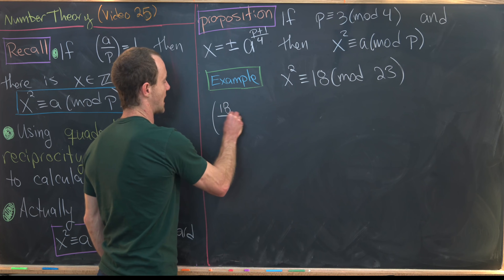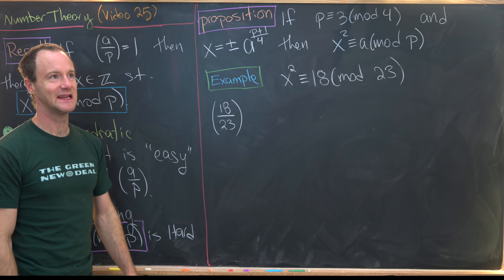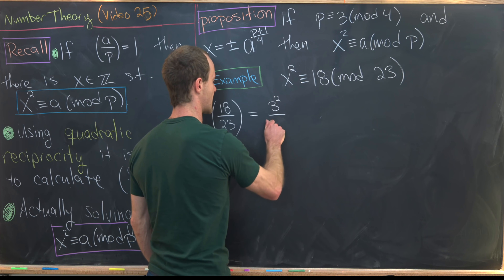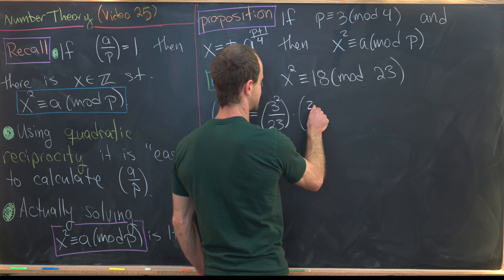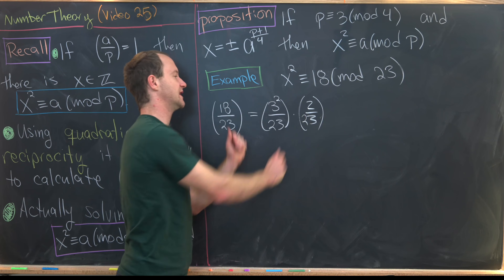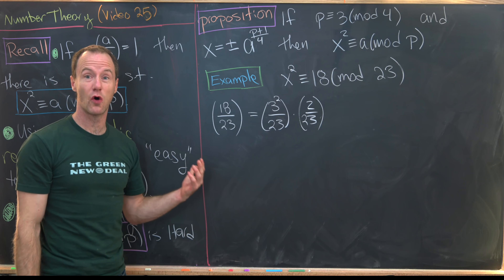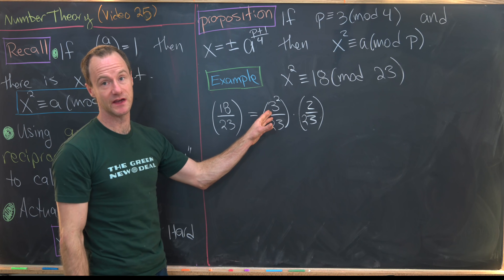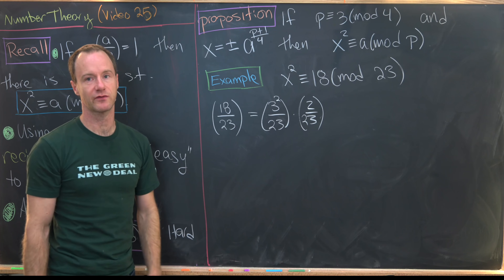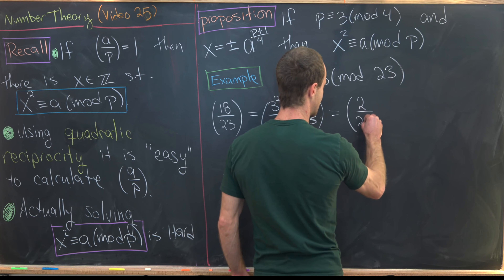We want to calculate (18/23). Notice that 18 = 2 × 9 = 2 × 3². So we rewrite this as (3²/23) × (2/23). Whenever you can factor the top part of the Legendre symbol, you can split it into two. Since 3² is already a perfect square, that Legendre symbol gives 1, so we only need to worry about (2/23).